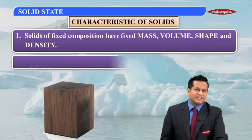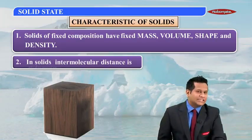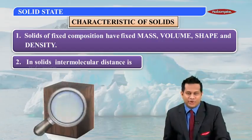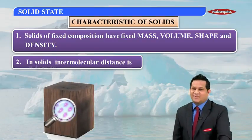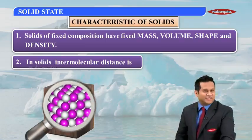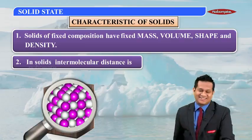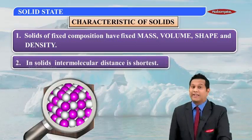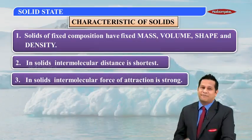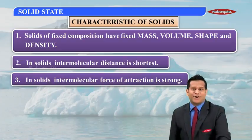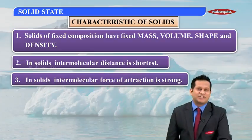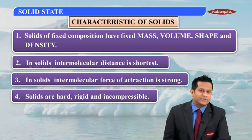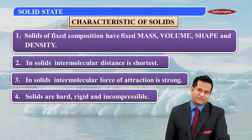The second characteristic of solids is that the intermolecular distance is very short. If you look inside the solid and magnify, you will observe that the arrangement of particles is very close, and hence the intermolecular distance in solids is the shortest. This is because the intermolecular force of attraction is very strong. Because the distance is very short and the IMF is very strong, solids are hard, rigid, and incompressible.